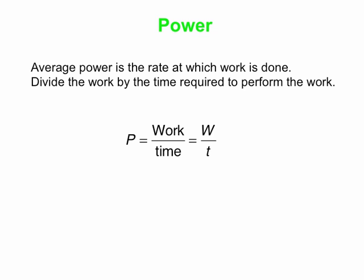Here's our equation: work over time, written as W over T, where W stands for work and T stands for the time interval during which that work is done. We've got to be a little careful here because the unit of power is the watt, which is also symbolized with the letter W. So the W in the equation W over T is the work, while this W for the unit is the watt. Don't get those mixed up.